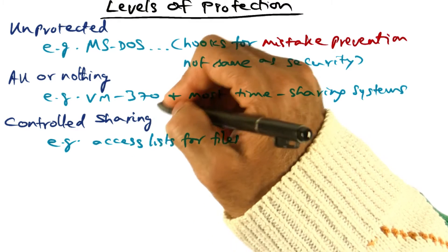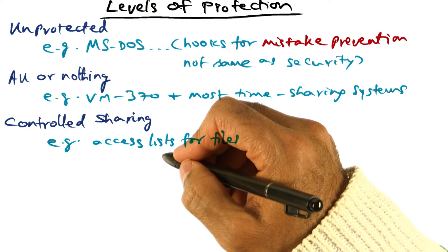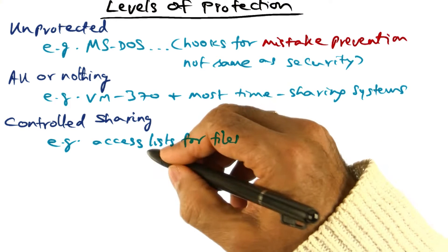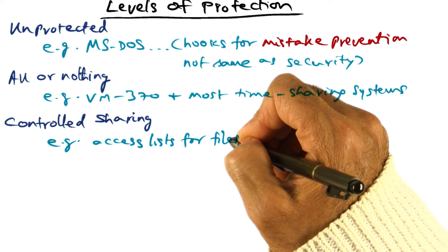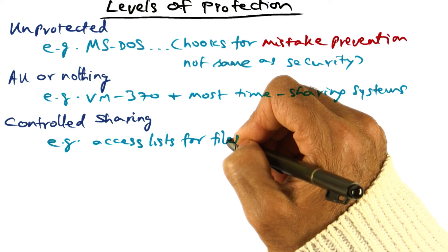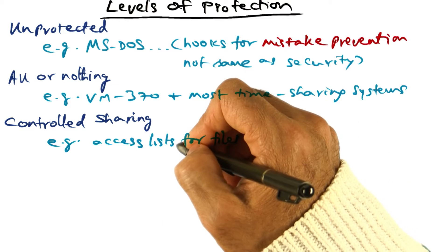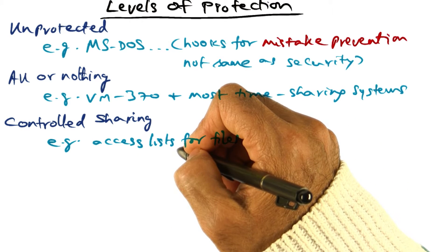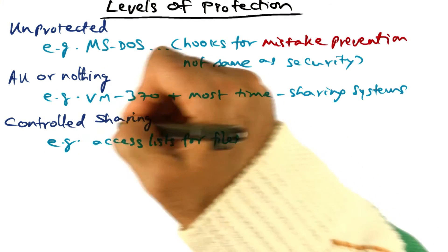The second level of protection is what Saltzer calls controlled sharing. For example, having access lists associated with files so that if I create a file, I could say my file can be shared by my students, and here are the names of the students that have access to that file. That's an access list you can associate with information you create and give to the system for safekeeping — that's controlled sharing.